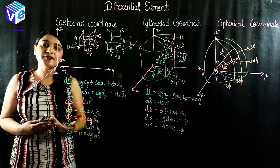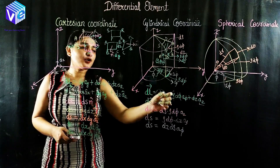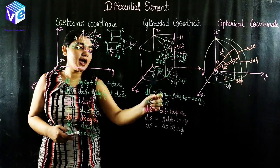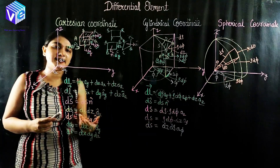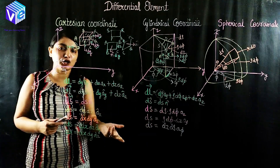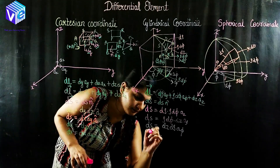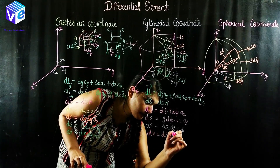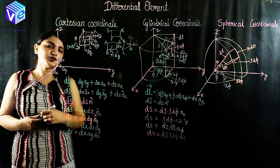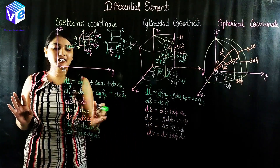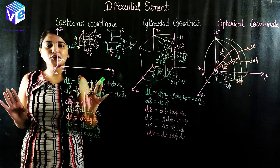For differential volume in cylindrical coordinates, I multiply the coefficients of each length: d-rho, rho·d-phi, and dz. So dv = rho·d-rho·d-phi·dz. There is no direction because it is a scalar quantity. The differential elements in Cartesian and cylindrical coordinates should now be clear.